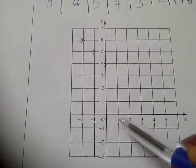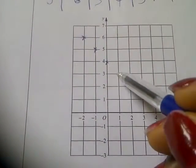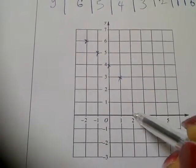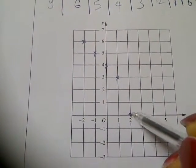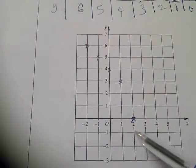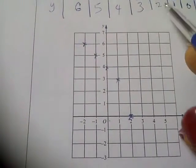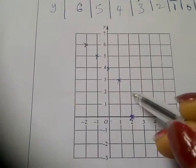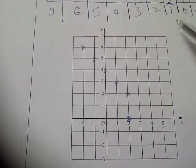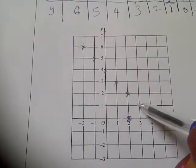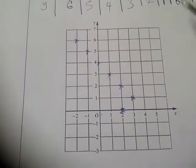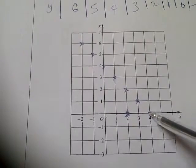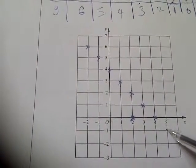Then when x is 1, y will be 3 — make another point here. When x is 2, y will be 2 — that will be a point here. When x is 3, y will be 1 — that will be a point here. When x is 4, y will be 0 — that will be a point here. When x is 5, y will be minus 1 — and that will be a point here.